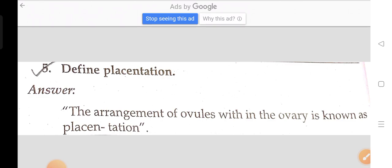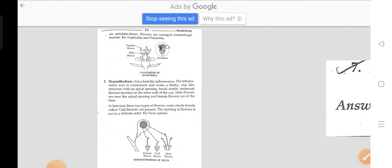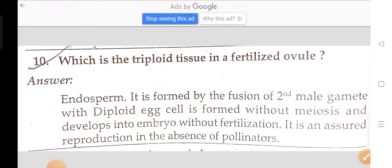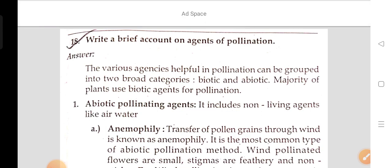Name the component cells of the egg apparatus in an embryo sac. What is the triploid tissue in a fertilized ovule? Provide a brief account on agents of pollination.